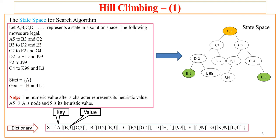One point to be noted is that the numeric value after a character represents its heuristic value. For example, in A5, A represents the node and 5 is its heuristic value. Similarly, we have B3 to D2 and E3, C2 to F2 and G4, D2 to H1 and I99, F2 to J99, G4 to K99 and L3. Also, the start state is given as A, and one doesn't need any goal description because the algorithm uses an optimization strategy.